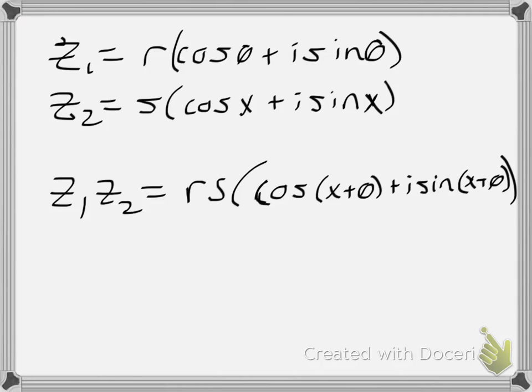We're going to use our formula, which is r times s times the quantity cosine of x plus theta. Basically, when it's multiplication, very much like logarithms, it's the sum of the two angles. So, i sine of my two angles, x plus theta.